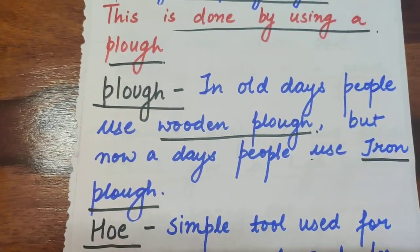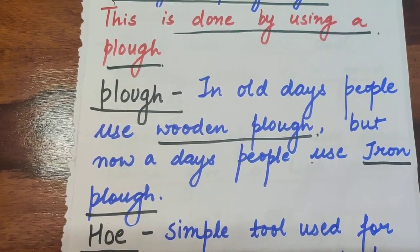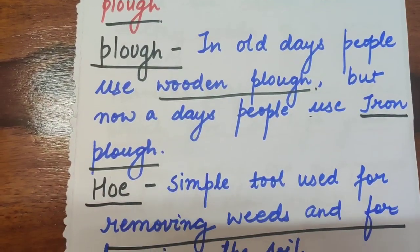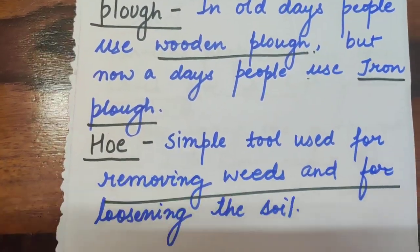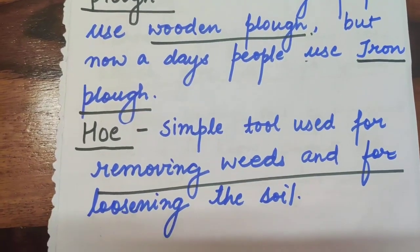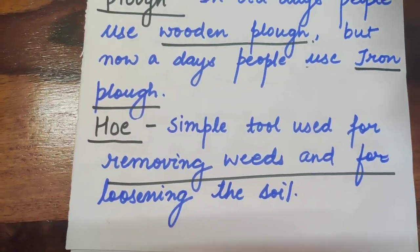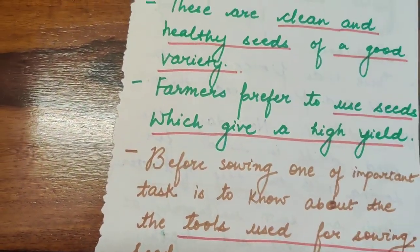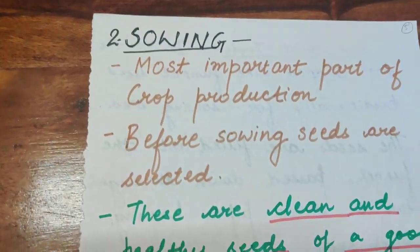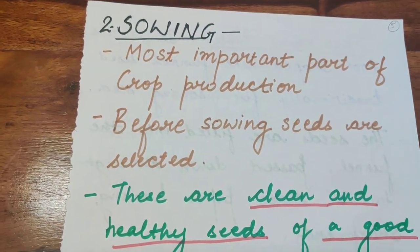In old days, people used a wooden plow for tilling the soil. Nowadays, people use an iron plow. There is also a tool called a hoe — a simple tool for removing weeds and loosening the soil. The plow, hoe, and cultivator are all shown with diagrams in your NCERT textbook.